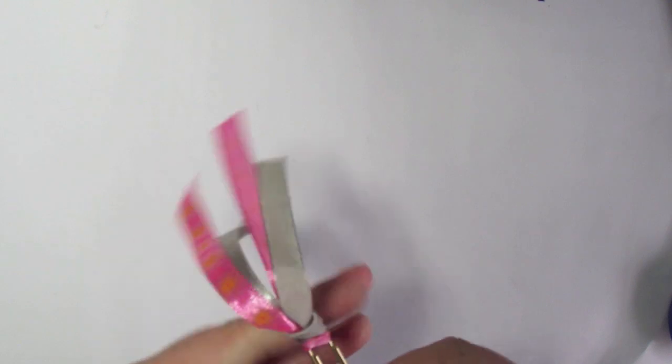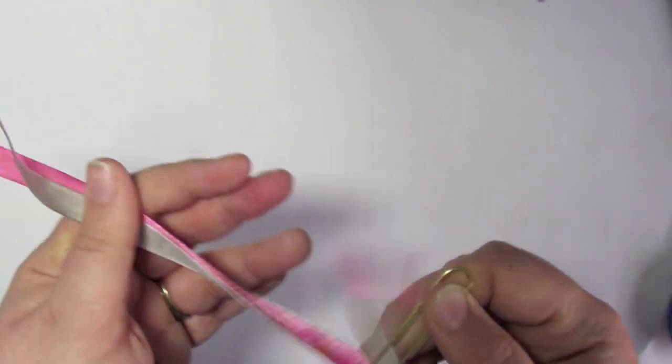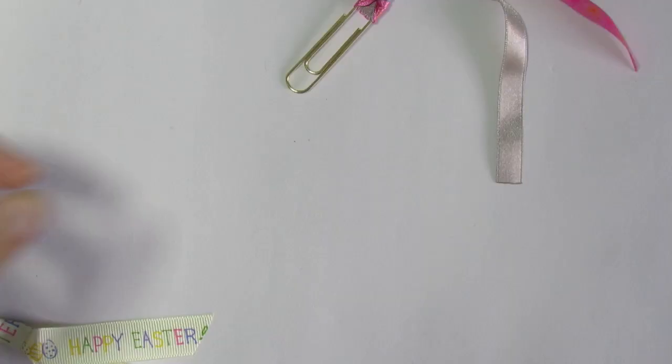This is where I start to look very clumsy, but there we go. Oh, so as you can see that one's twisted round, so you just want to make sure that it twists back right round the other way. So I'll do that off camera because you don't need to see me clumsying around.